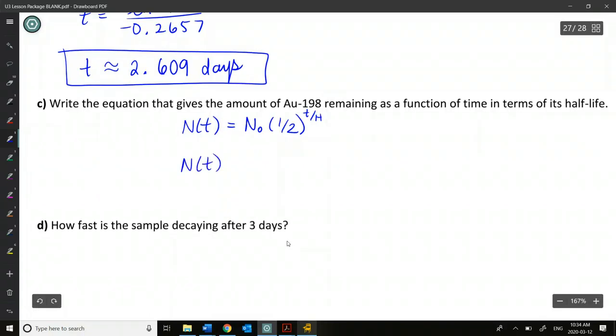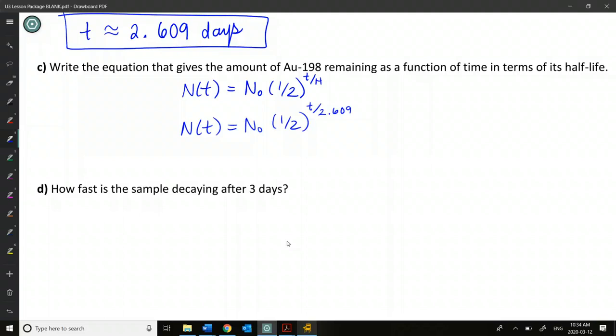And it's asking us to write this as a half-life. So we do half to the exponent t over h where capital H is the half-life. So if we found the half-life to be 2.609 days, we're going to have n at t. The initial sample we could leave as the initial sample or if we know what it is we can enter it in. In this case, we'll just leave it as n0 or if you want you can put in 6, whatever. And then our half-life is 2.609. So we'll put that in as the half-life.